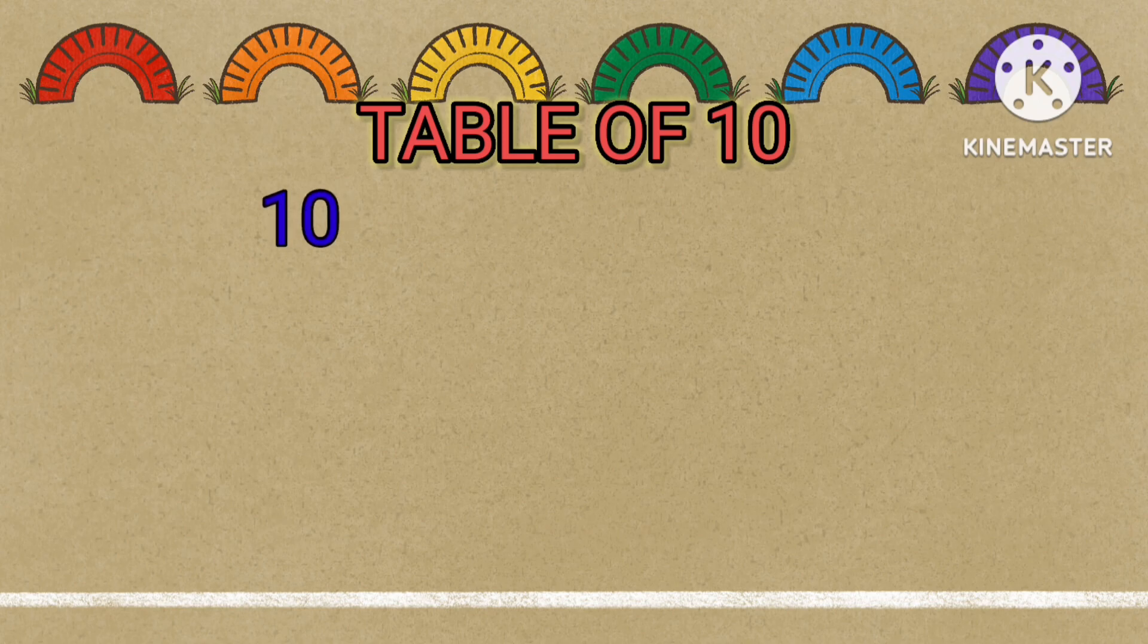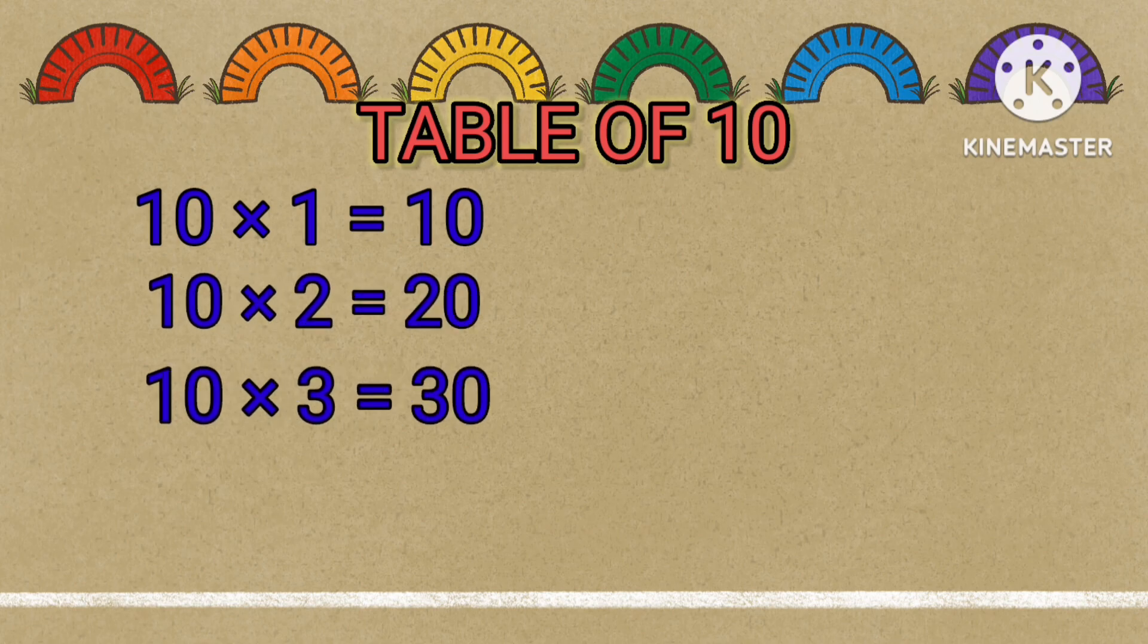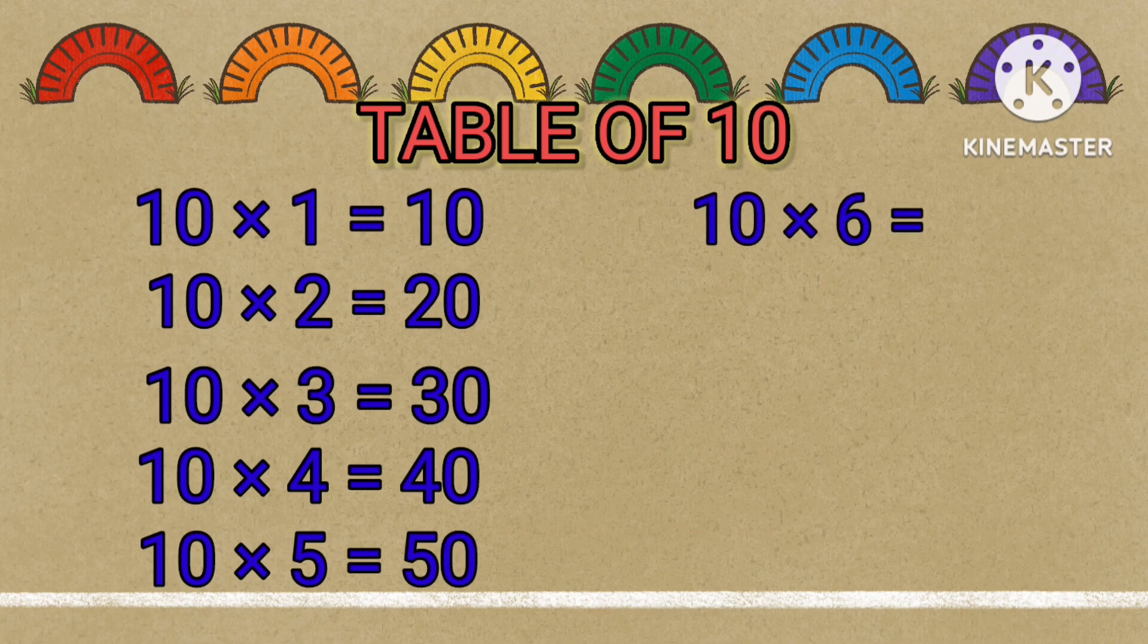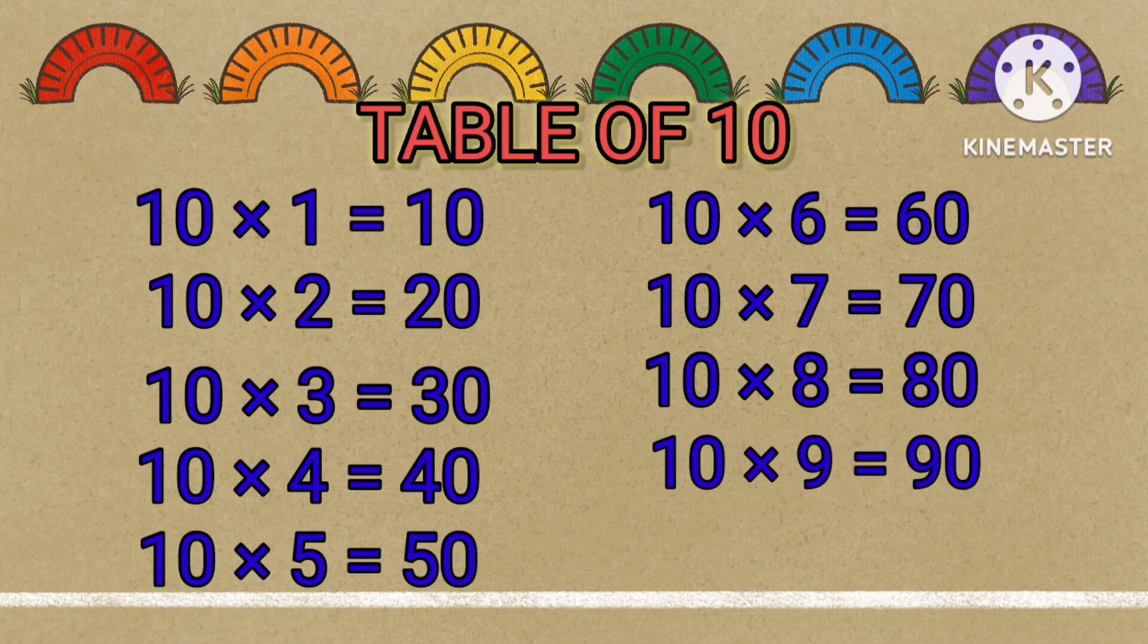Table of 10: 10 times 1 equals 10, 10 times 2 equals 20, 10 times 3 equals 30, 10 times 4 equals 40, 10 times 5 equals 50, 10 times 6 equals 60, 10 times 7 equals 70, 10 times 8 equals 80, 10 times 9 equals 90, 10 times 10 equals 100.